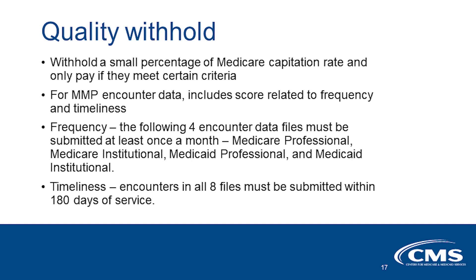The last tool we'll discuss for promoting complete encounter data is quality withhold. We withhold a small percentage of each capitation payment to the MMPs and only pay it out if they meet certain criteria. One is related to encounter data. We score them on frequency and timeliness, and they need an 80% or better score to pass. For frequency, they need to submit the following four files at least once a month: Medicare Professional, Medicare Institutional, Medicaid Professional, and Medicaid Institutional. For timeliness, encounters in all eight files must be submitted within 180 days of service.